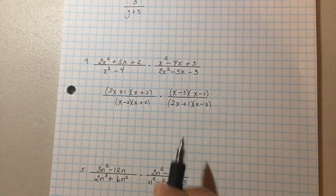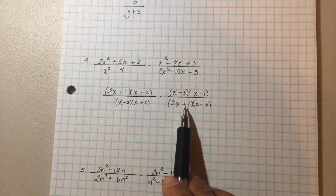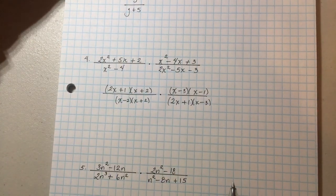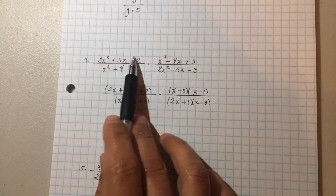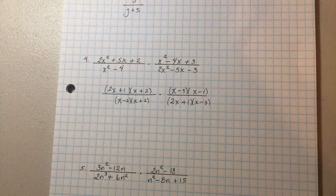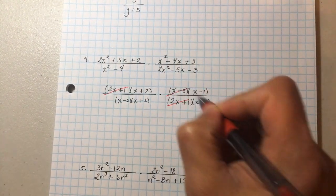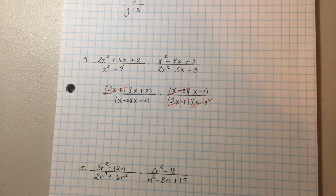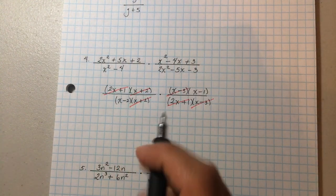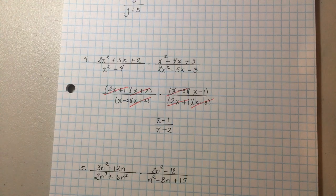For the last denominator, factor it as two x plus one and x minus three — two x times negative three gives negative six x, plus one x gives negative five x, and one times negative three gives negative three. Now cancel: two x plus one over two x plus one is one. x minus three over x minus three is one. x plus two over x plus two is one. What's left? x minus one over x minus two — that's your final answer.